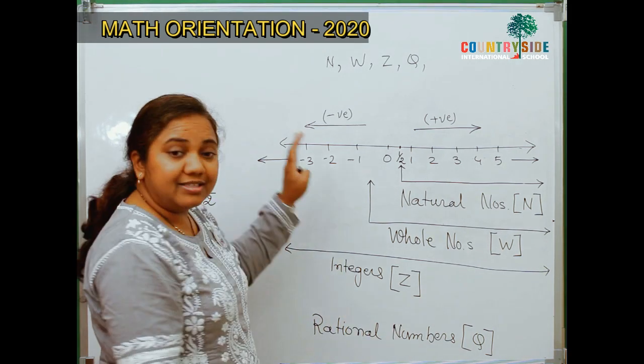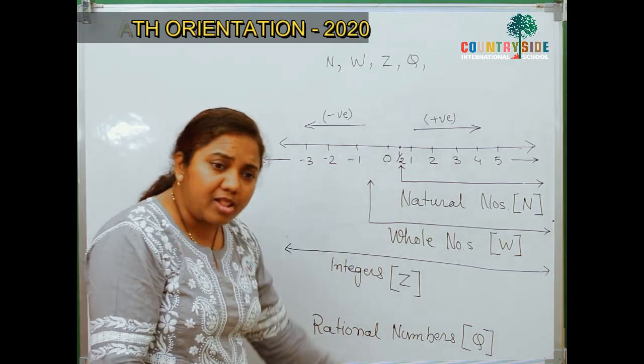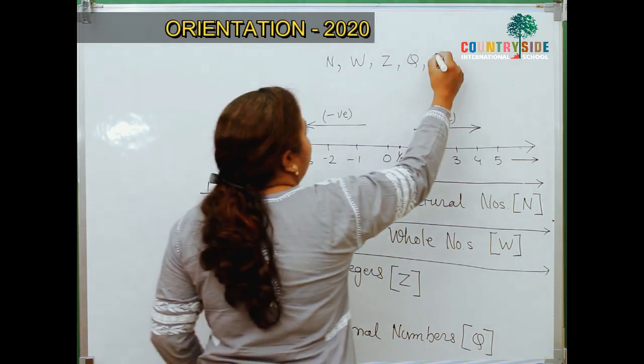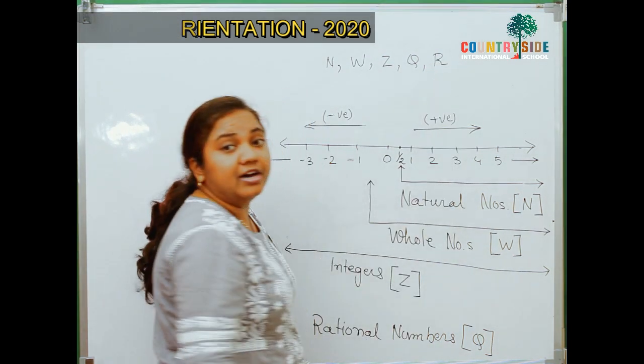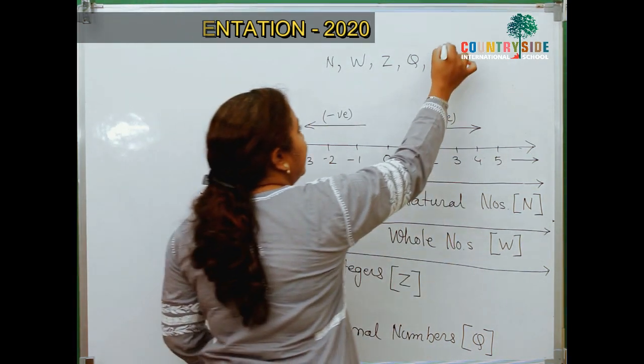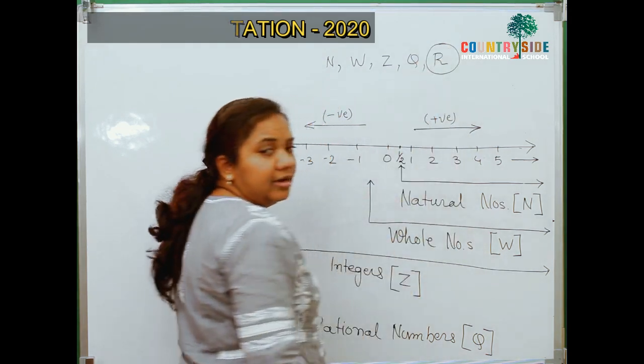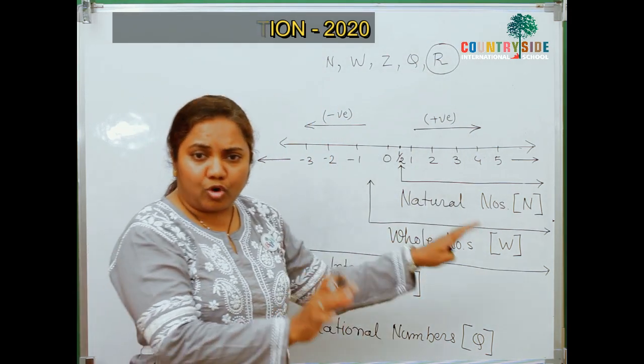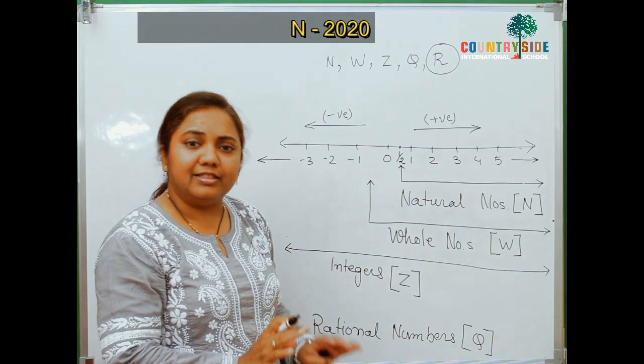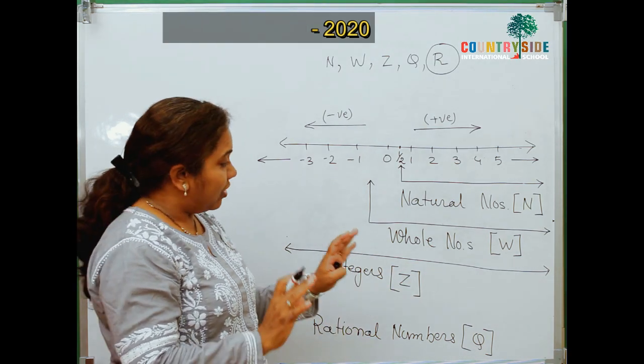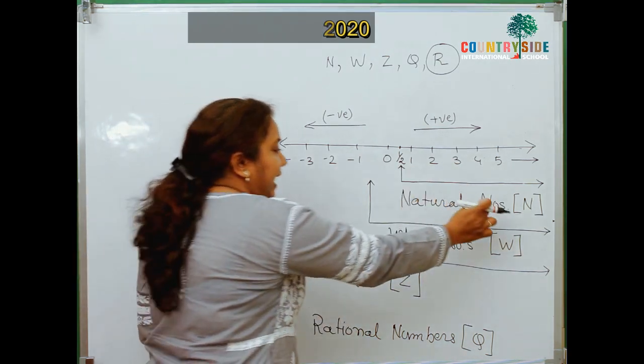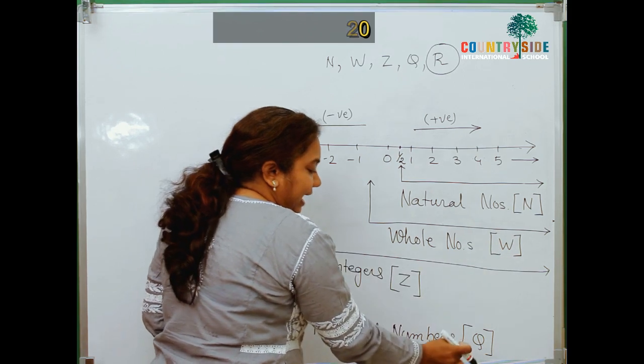Now, above all, the set which includes all these numbers is called a set of real numbers which is denoted by R. But, that is out of our scope now as it is not covered in the syllabus yet. So, now we will focus N, W, Z and Q.